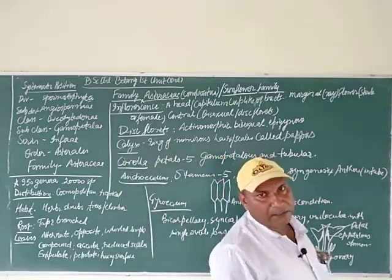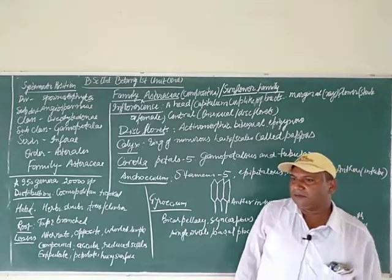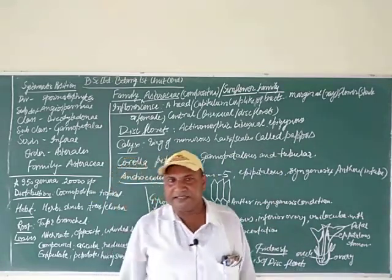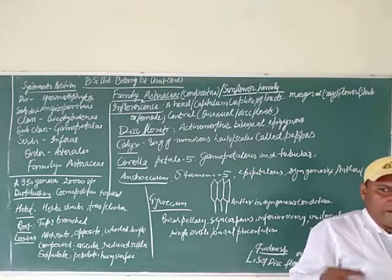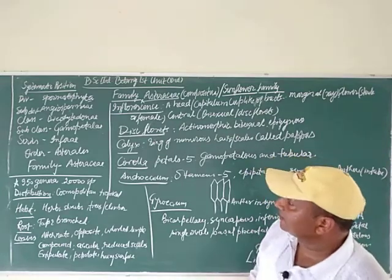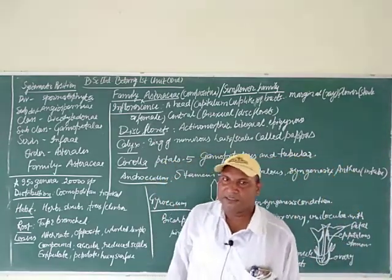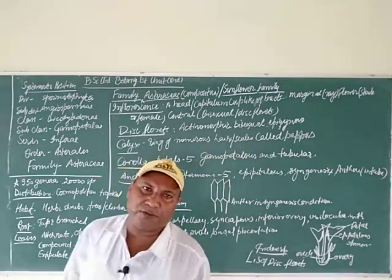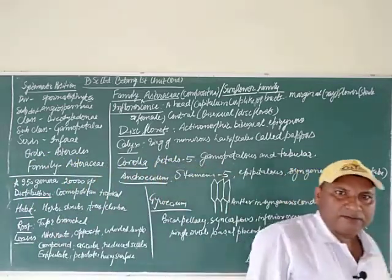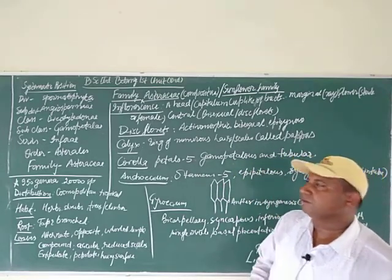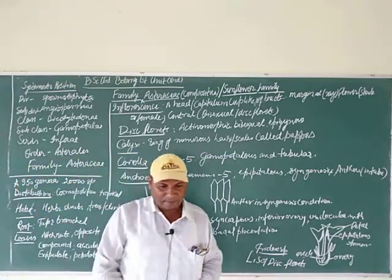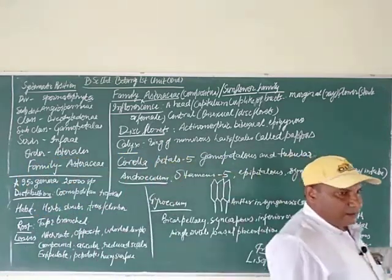The subclass is Gamopetalae. The class Dicotyledonae is subdivided into three subclasses: Polypetalae, Gamopetalae, and Monochlamideae. In previous lectures, the families we studied belonged to the subclass Polypetalae. Now we are studying Gamopetalae, where the petals are united together.